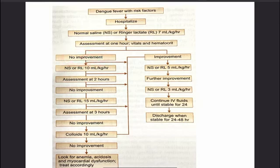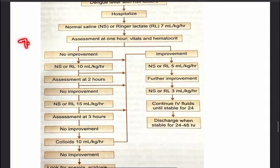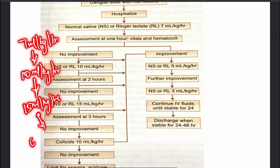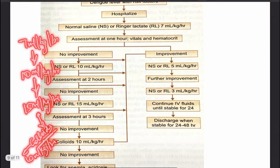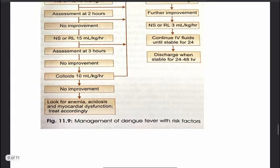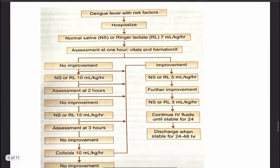If there is no improvement starting at 7 ml/kg/hour, we increase to NS or Ringer's lactate at 10 ml/kg/hour, then reassess after 1 hour. If still no improvement, increase to 15 ml/kg/hour. If there is still no improvement, we start colloids at 10 ml/kg/hour. If there is still no response, we look for other causes such as anemia, acidosis, or myocardial dysfunction and treat accordingly.